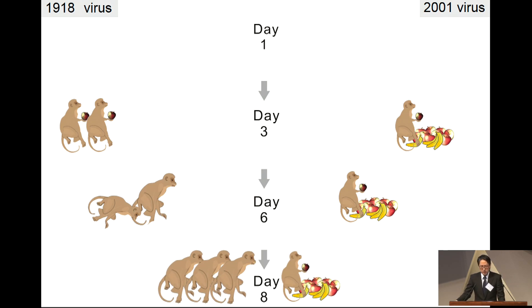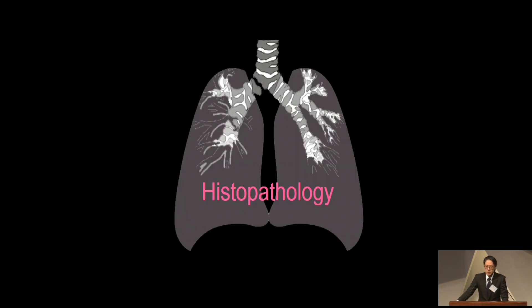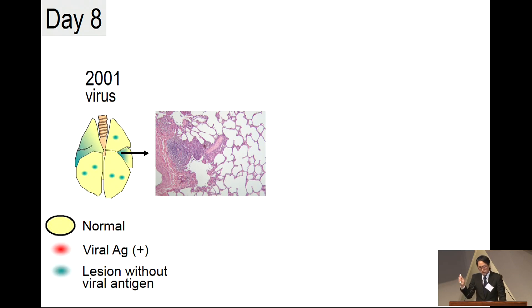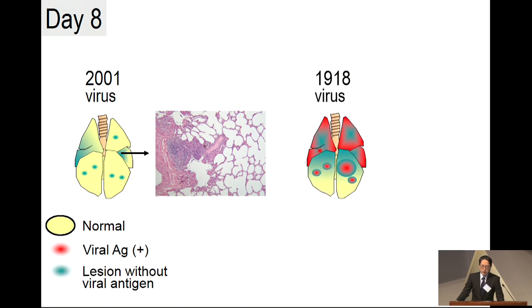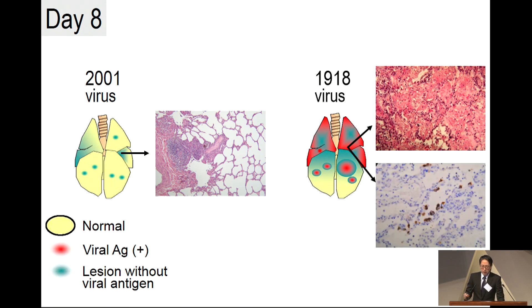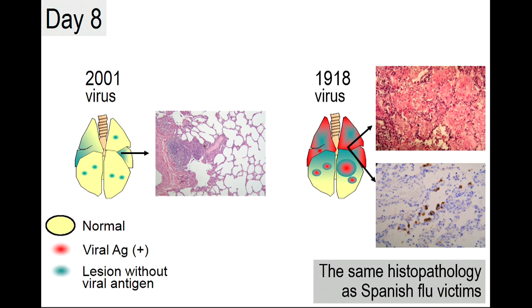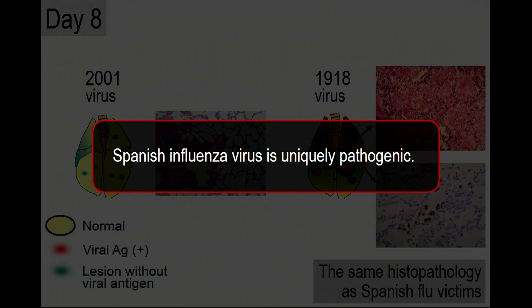The remaining three animals in the 1918 group became really sick, so we had to euthanize them. Spanish influenza virus is lethal to macaques, and this is the only influenza virus that is lethal in non-human primates. Histopathologically, there is mild inflammation in the lung tissue of animals infected with 2001 seasonal influenza, but the lungs of animals infected with the 1918 virus are filled with fluid and inflammatory cells. The brown cells indicate virus replication in the lung — 1918 virus replicates in the lung, whereas seasonal influenza viruses do not replicate in the human lung. This is the same histopathology as seen in Spanish influenza victims.